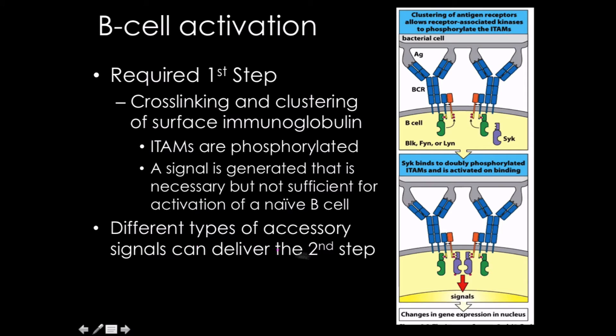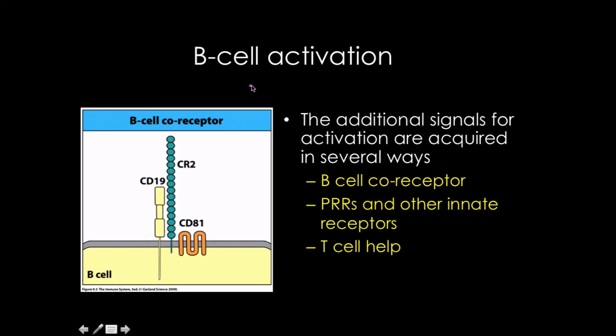The thing I really want to stress here is the second step. The second step can be different — it doesn't have to all be the same thing. It can be really strong in one area, or interspersed throughout. But for the first step, we have to have this clustering and cross-linking happening. One of the most common ways we do this is by the use of the B-cell co-receptor to enhance the signal strength from the clustering.